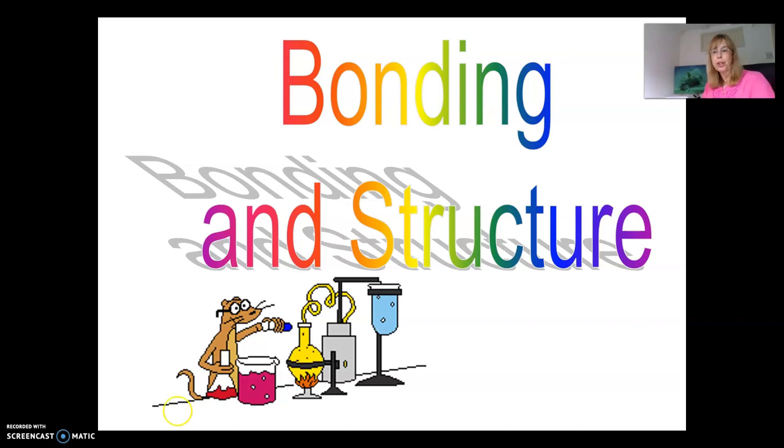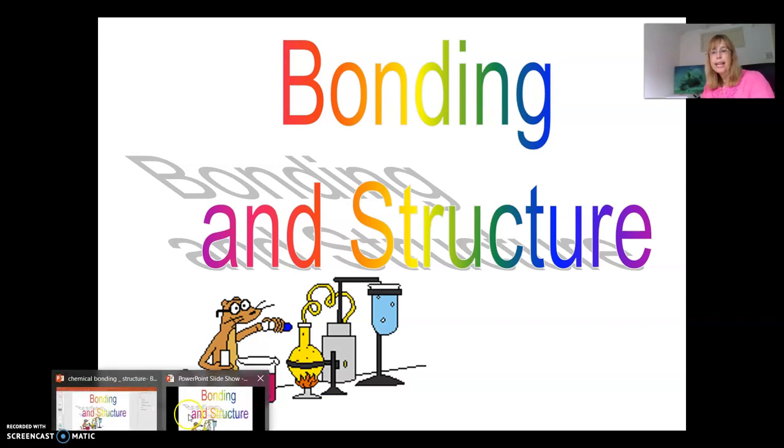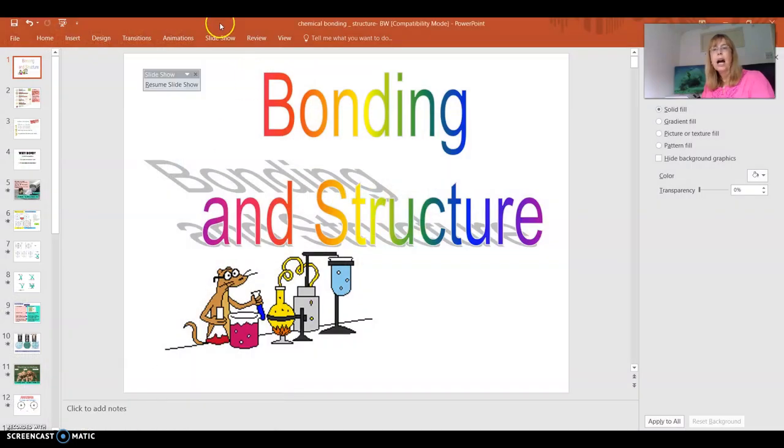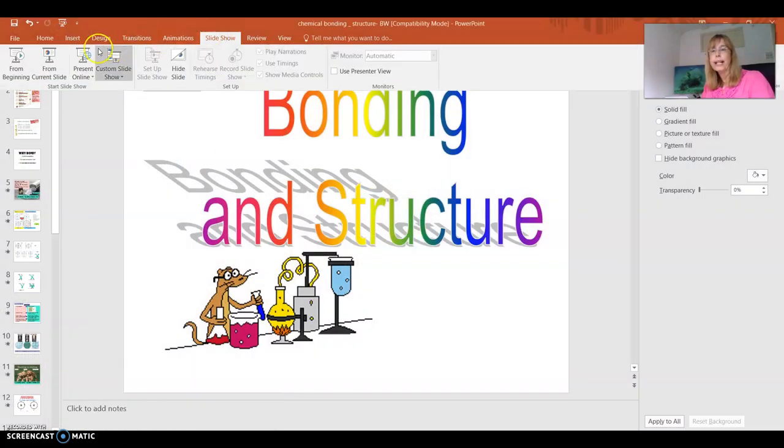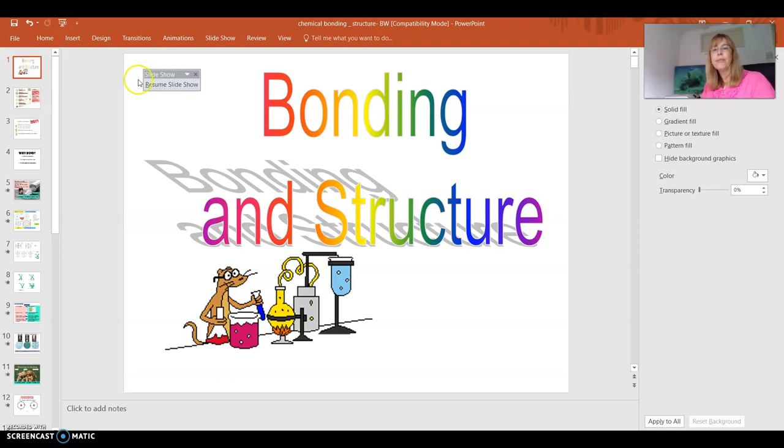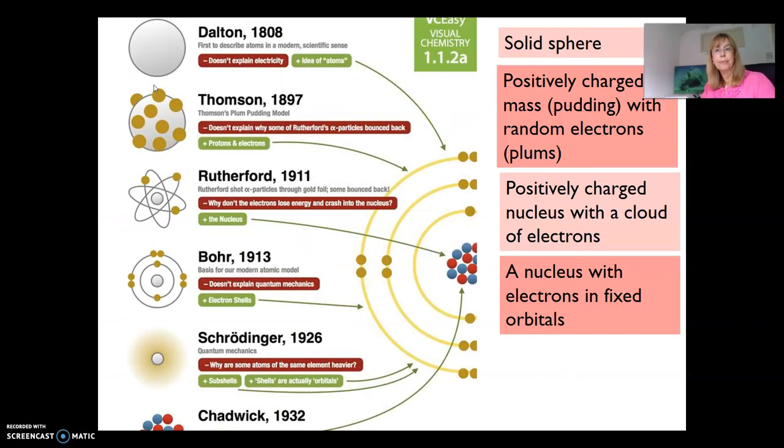Before we get started, I'm very quickly going to look at atom history. Dalton was the first scientist who made a serious contribution about what an atom may look like. Through experiments he worked out that it would be a solid sphere, think of it as a snooker ball.